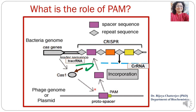The protospacer is recognized by the Cas9 endonuclease and inactivated only if it is followed by the PAM sequence. So the PAM sequence acts like a barcode which codes the protospacer.